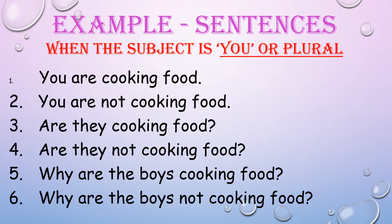Examples when the subject is "you" or plural: positive — "You are cooking food." Negative — "You are not cooking food." Interrogative positive — "Are they cooking food?" Interrogative negative — "Are they not cooking food?" WH family positive — "Why are the boys cooking food?" WH family negative — "Why are the boys not cooking food?"